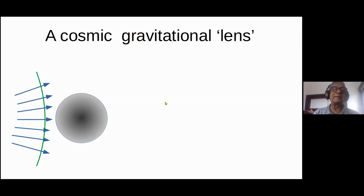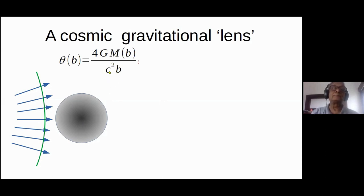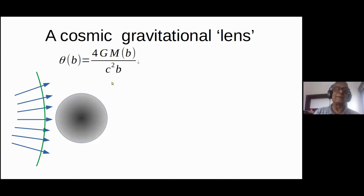What happens to these rays when they pass near this mass? Einstein told us long ago that they get bent. Here's the Einstein formula for the bending of light. You have Newton's constant for gravity, and if you have a ray which passes the center at a distance b — the impact parameter, the closest approach of this line to the center — then there's a certain mass enclosed inside the cylinder of radius b, and that's the mass effective in deflecting the ray.